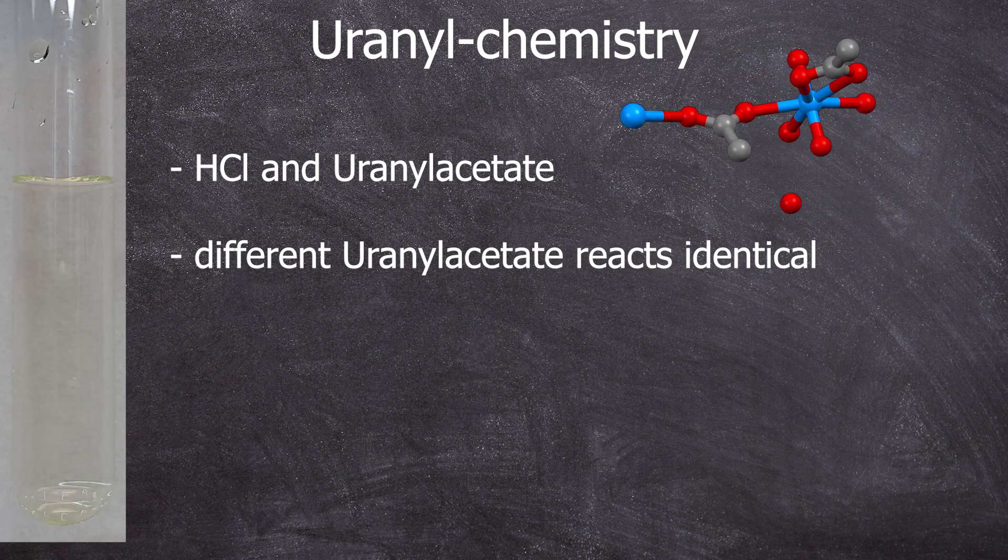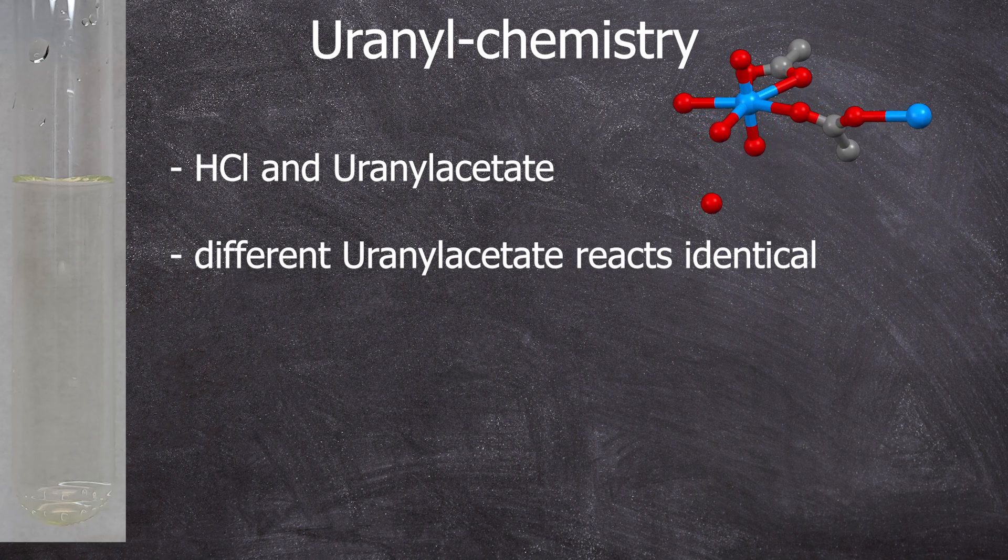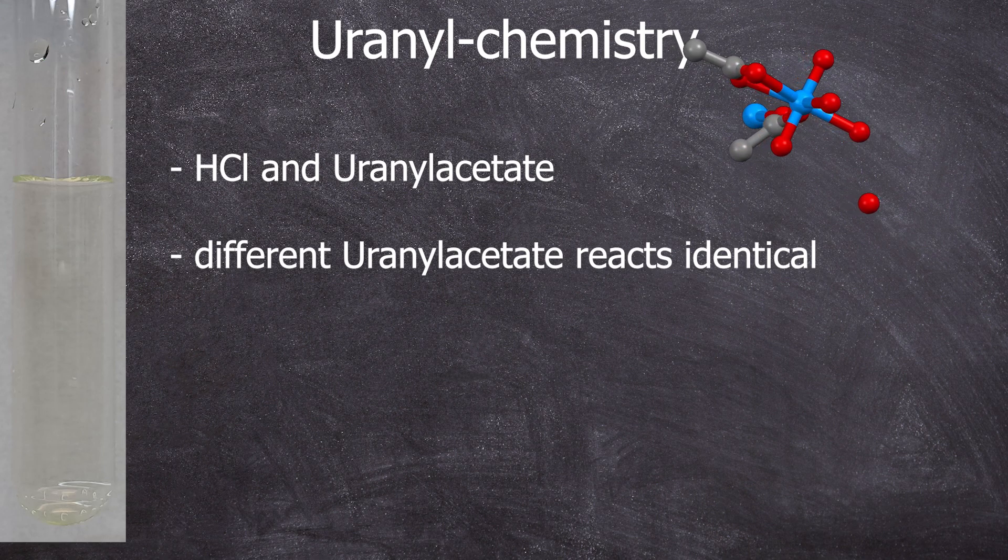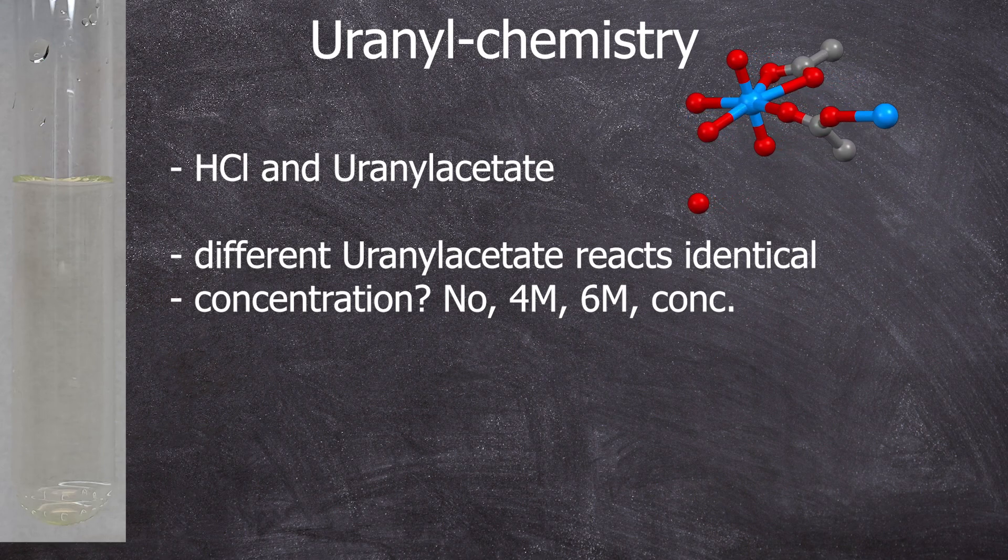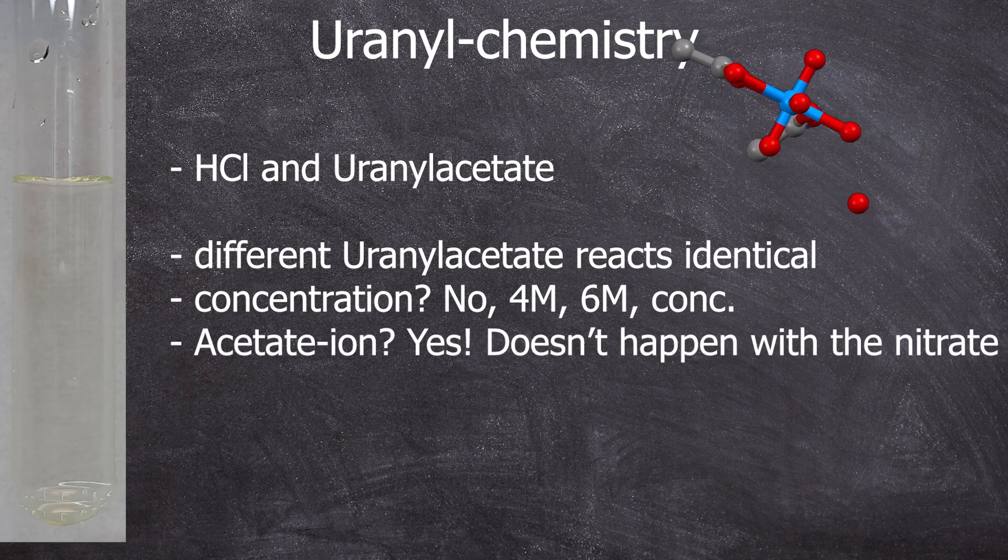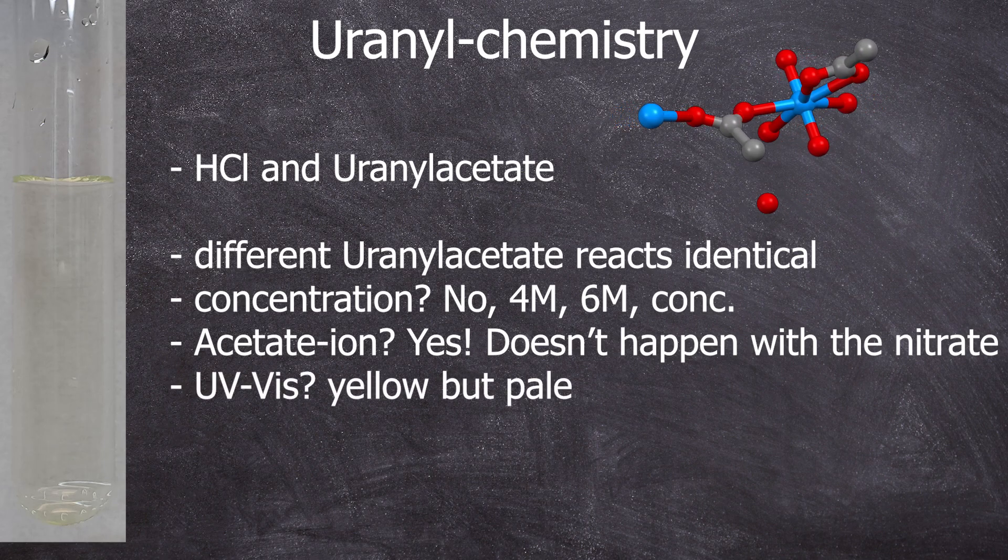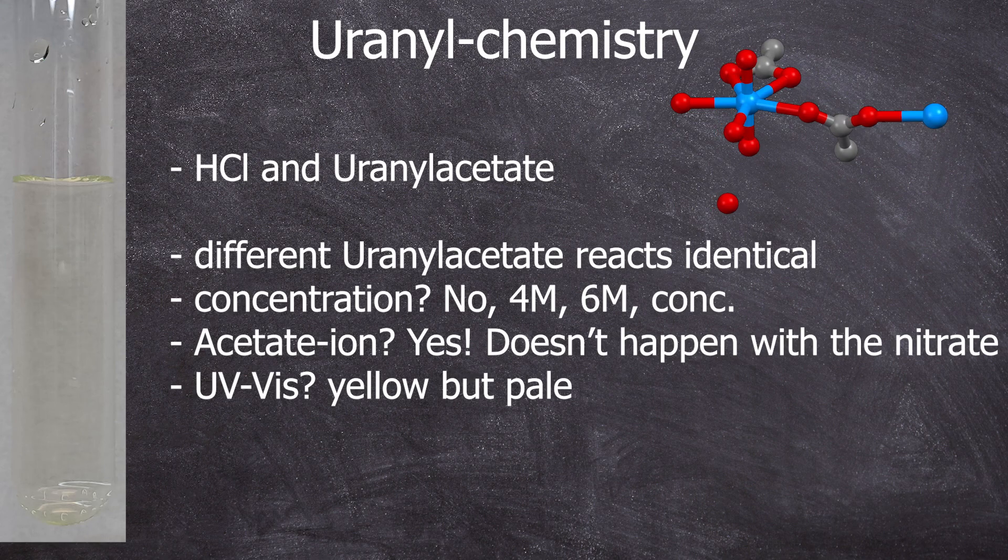I have no idea. I have been experimenting for over a week now and I still don't know much more. Was it this particular uranyl acetate? No, I used different uranyl acetate from a different container and it behaved the same way. Was it the hydrochloric acid? No, I used 4 molar, 6 molar and concentrated hydrochloric acid and they all showed the same decolorizing effect. Was it the acetate ion? Yes, it did not happen with the uranyl nitrate. I measured a UV-vis and there was no change in color. It remained yellow, but disproportionately paler than could be explained by just a normal dilution effect.